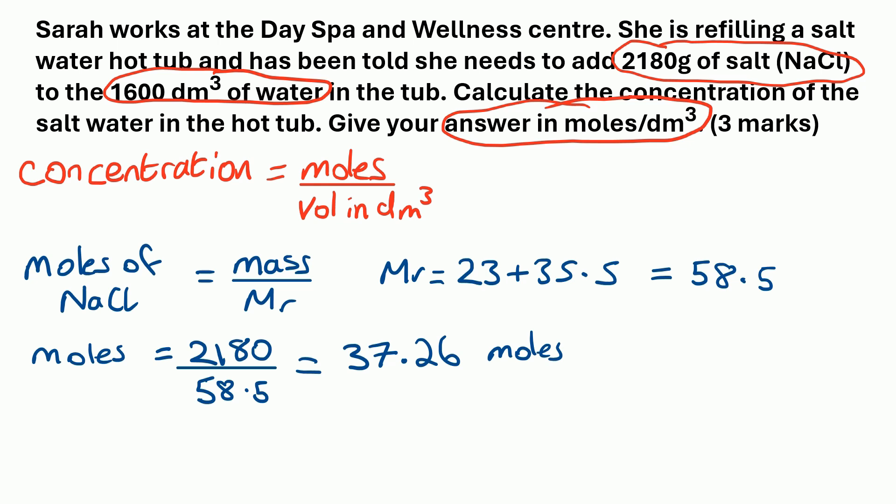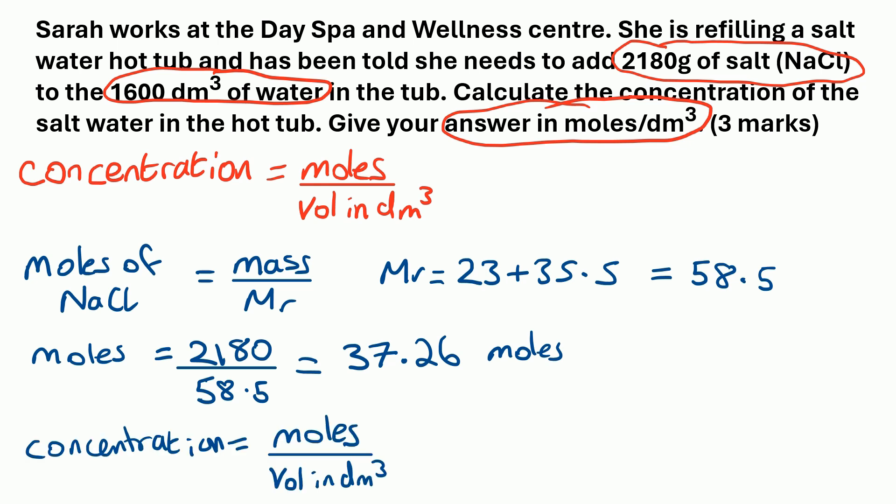Then we need to go back to the concentration equation: concentration is moles divided by volume in dm³. We've got 37.26 moles and the volume is 1,600 dm³. That gives us 0.023 moles per dm³.